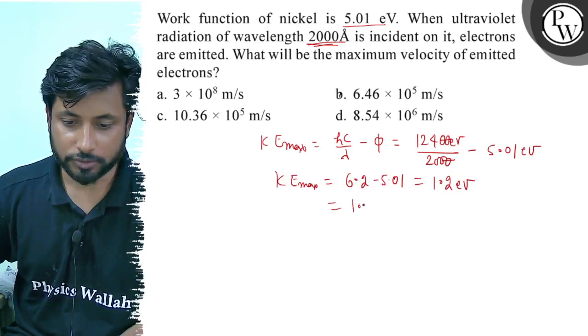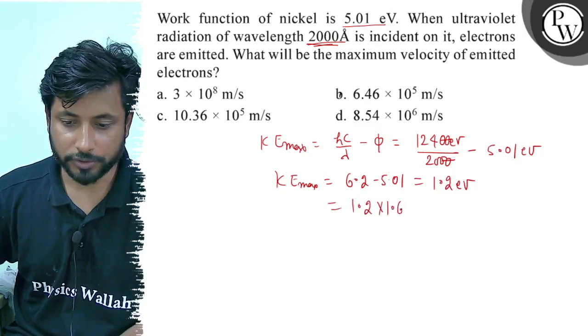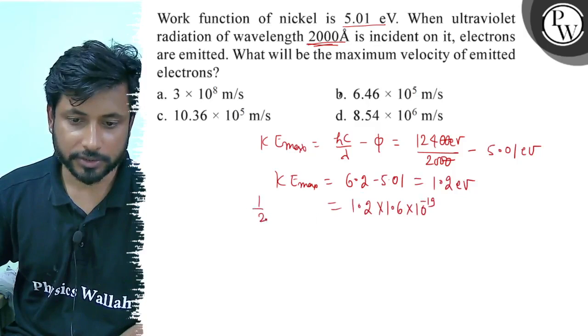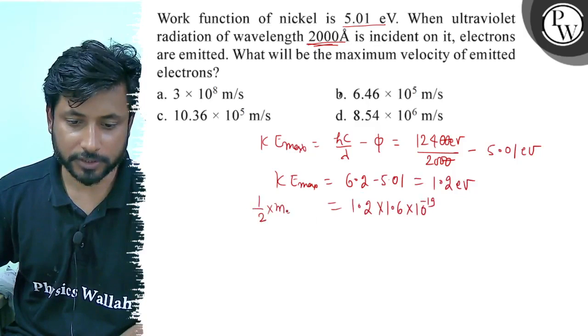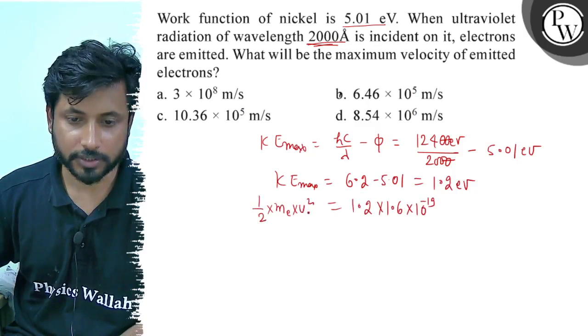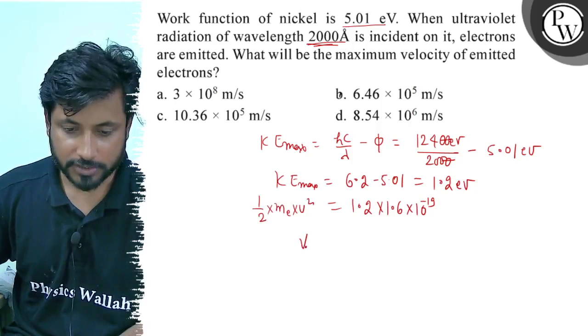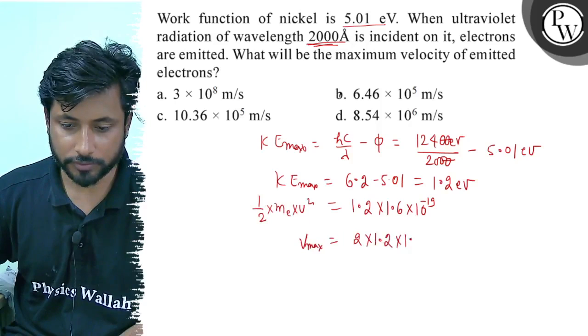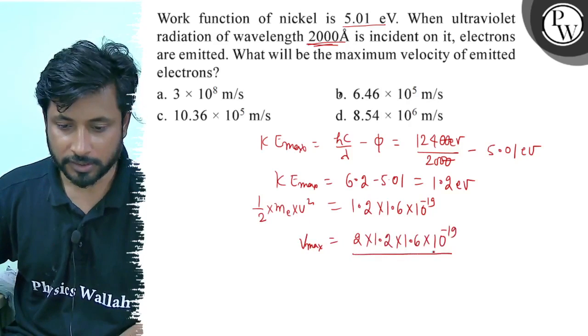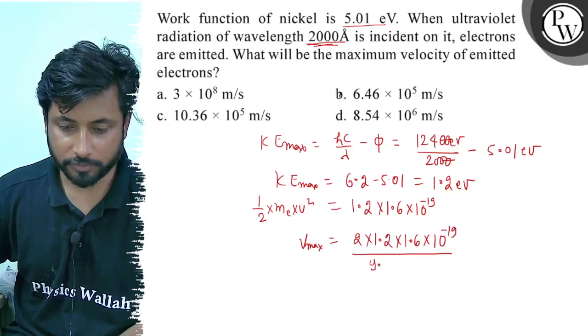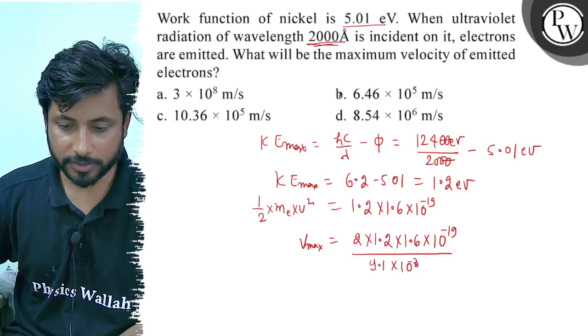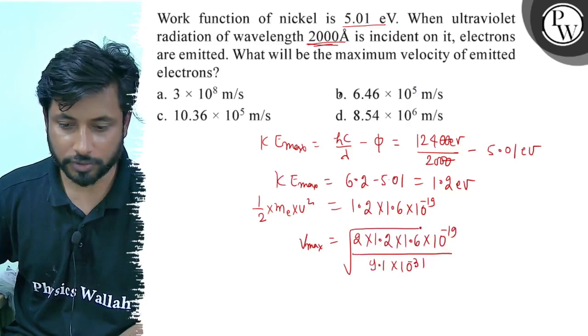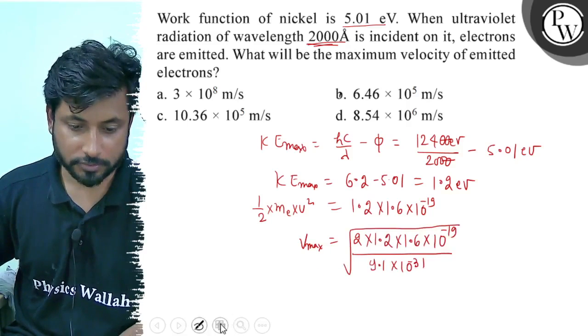Now convert it to joules. So this will be 1.2 × 1.6 × 10^-19 joules. One half m v^2 equals 1.2 × 1.6 × 10^-19 divided by mass of electron 9.1 × 10^-31 kg, then take the square root.